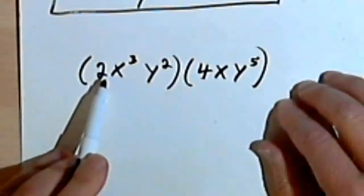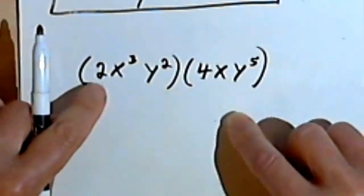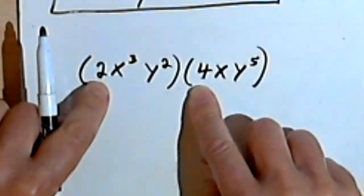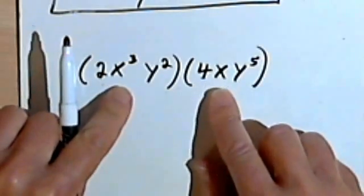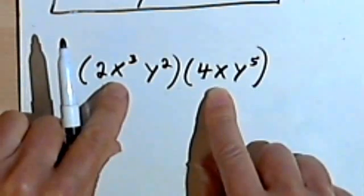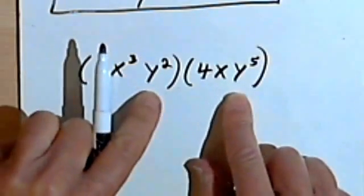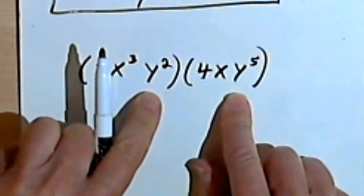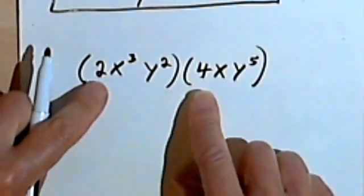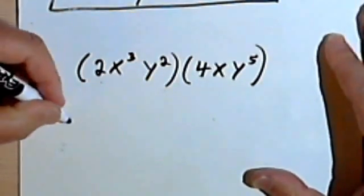When you do this, all you're going to do is multiply the coefficients by the coefficients — in other words, the 2 times the 4 — and then take each of the variables separately. Take the x's and multiply them together, take the y's and multiply them together. So 2 times 4 is going to give me 8.